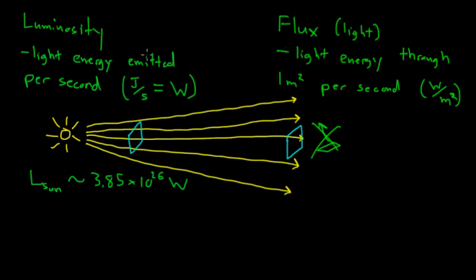So we see we have two different notions of what we mean by brightness. The luminosity is kind of the intrinsic brightness of the source. How much energy is it giving off per unit time, per second? Or we have how much of that light is actually reaching our detector.